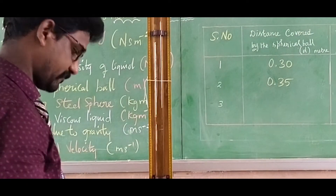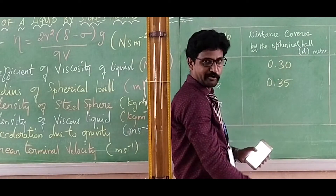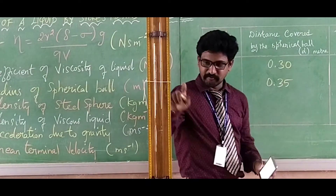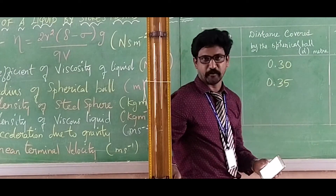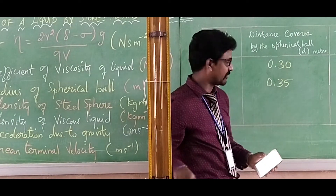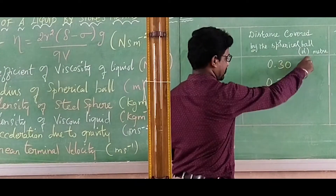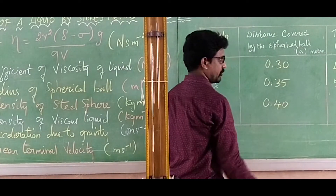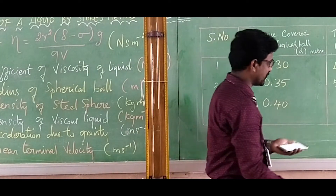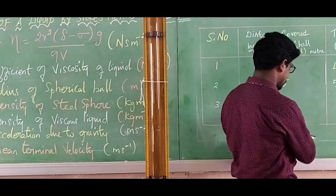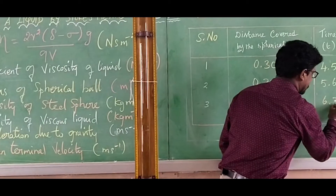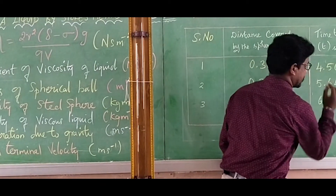The time taken by the metallic ball to travel the distance from 40 centimeters to 80 centimeters, which is 40 centimeters or 0.40 meters, is confirmed as 6.35 seconds by the stopwatch.